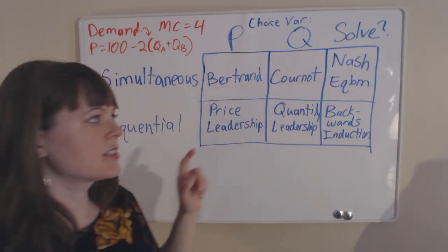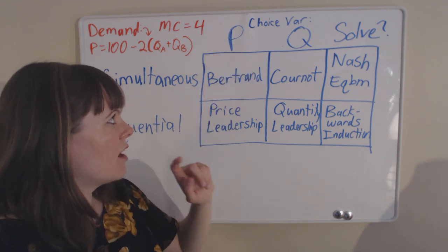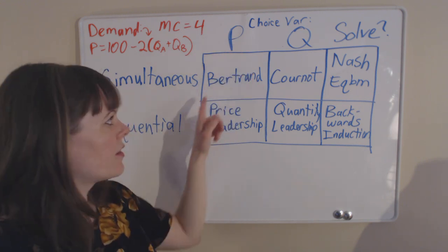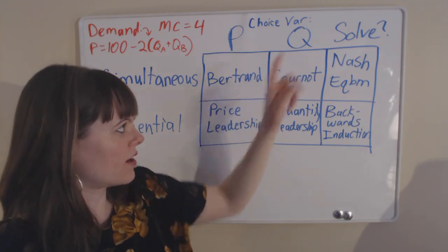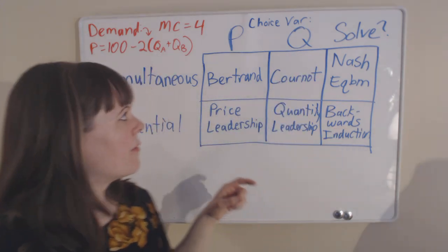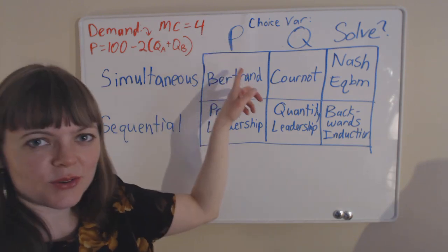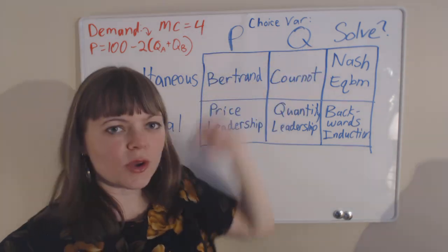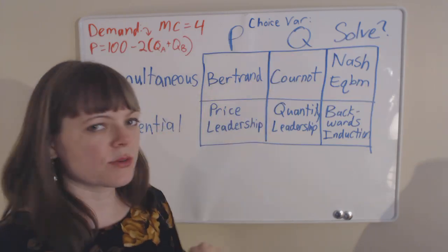The simultaneous move oligopolies both have a name. If price is the choice variable, then it's a Bertrand oligopoly. If quantity is the choice variable, it's a Cournot oligopoly. I always remember the two because B and P kind of sound alike, and C and Q kind of sound alike.